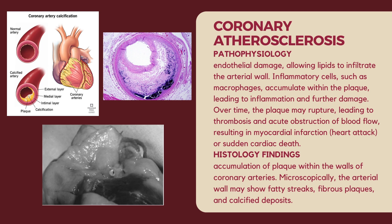First, we have coronary atherosclerosis, characterized by the accumulation of plaque within the walls of coronary arteries. Plaque is composed of lipids, cholesterol, inflammatory cells, and fibrous tissues. Microscopically, the arterial wall may show fatty streaks, fibrous plaques, and calcified deposits. The pathophysiology begins with endothelial damage, allowing lipids to infiltrate the arterial wall. Inflammatory cells such as macrophages accumulate within the plaque, leading to inflammation and further damage. Over time, the plaque may rupture, leading to thrombosis and acute obstruction of blood flow, resulting in myocardial infarction or sudden cardiac death.